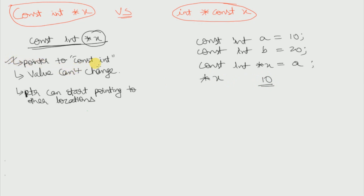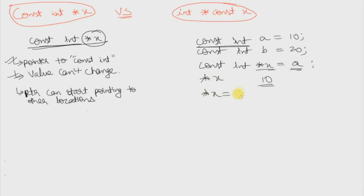So the first point is: x is a pointer to a constant integer variable a. The value cannot change — that means we cannot alter the value of `*x` because it is pointing to a constant integer variable, and we cannot alter the value of a constant integer throughout its scope. So if we write `*x = *x + 1` then this will be totally invalid.